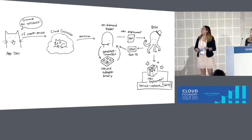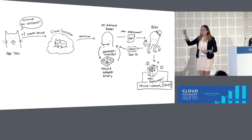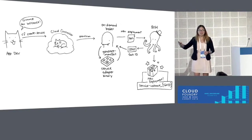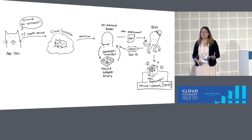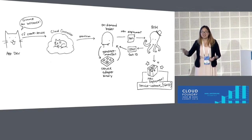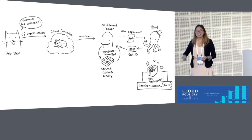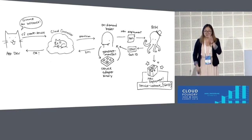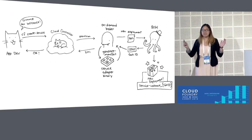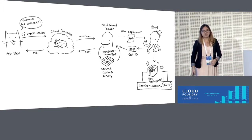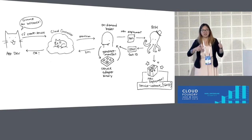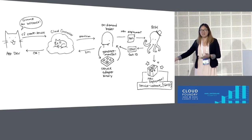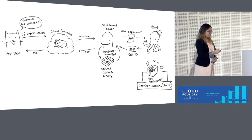If all goes well, Bosh will go off in the background and do its asynchronous thing and return a task ID. The ODB will poll that task ID asking if it's done yet, and eventually Bosh will say it's done. Then the ODB tells Cloud Controller 201, and Cloud Controller will tell the app developer via the CLI that the new service instance is ready.